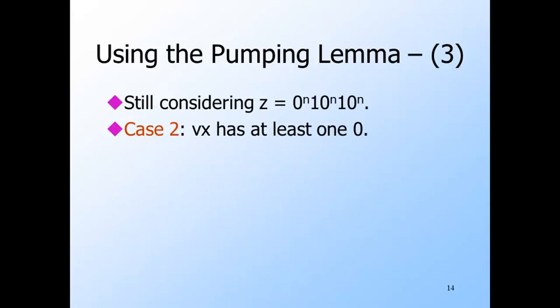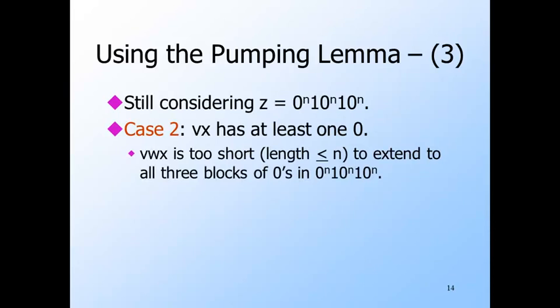In the second and last case, v and x have at least one zero among them. V w x has length at most n. So these three substrings cannot extend from the first block of zeros to the last, because n plus 2 positions separate those blocks.